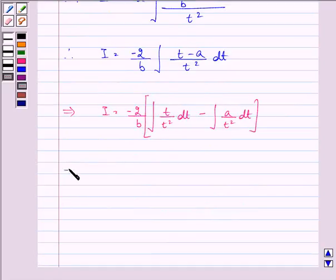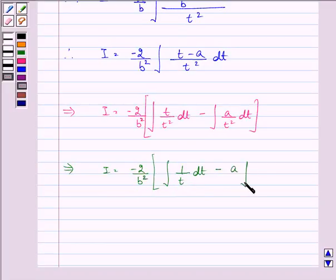Which further implies I is equal to minus 2 upon b, the bracket integral 1 upon t dt minus a integral 1 upon t square dt.